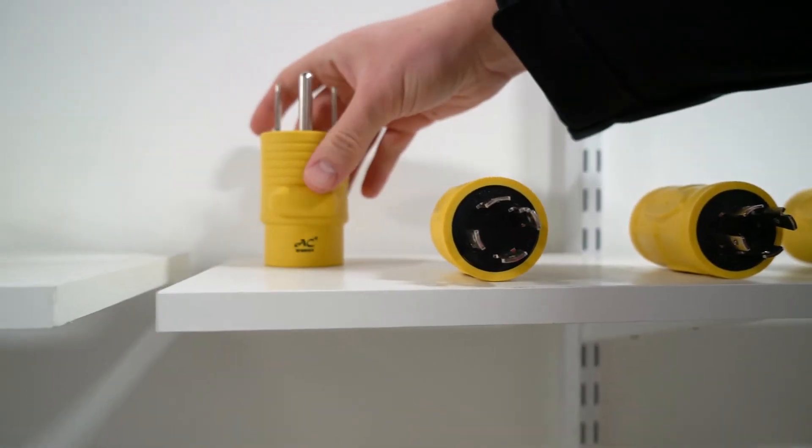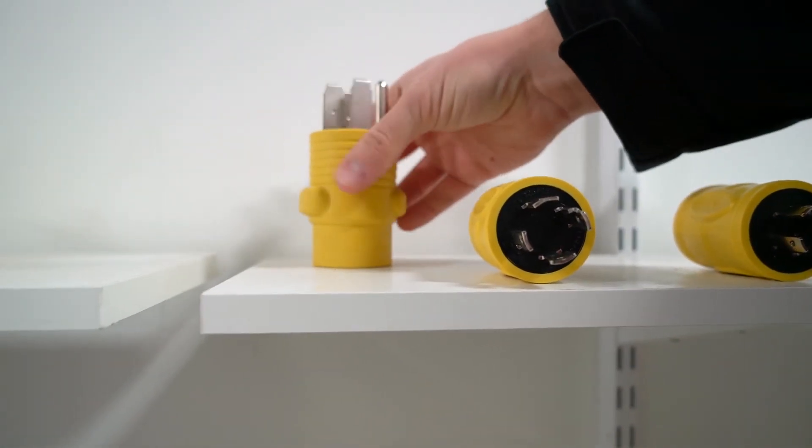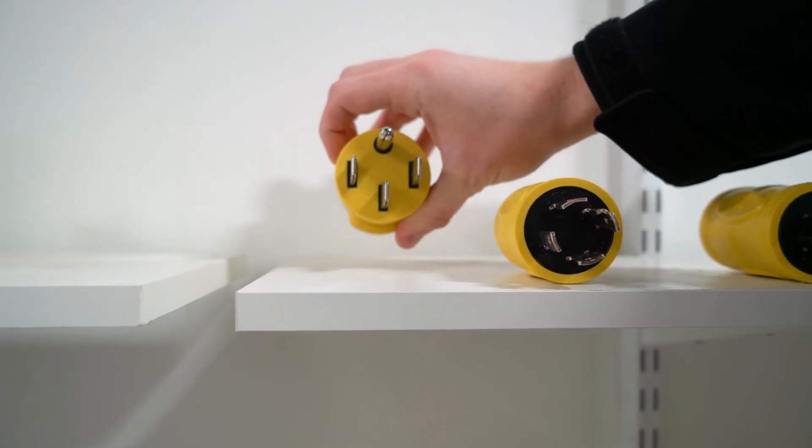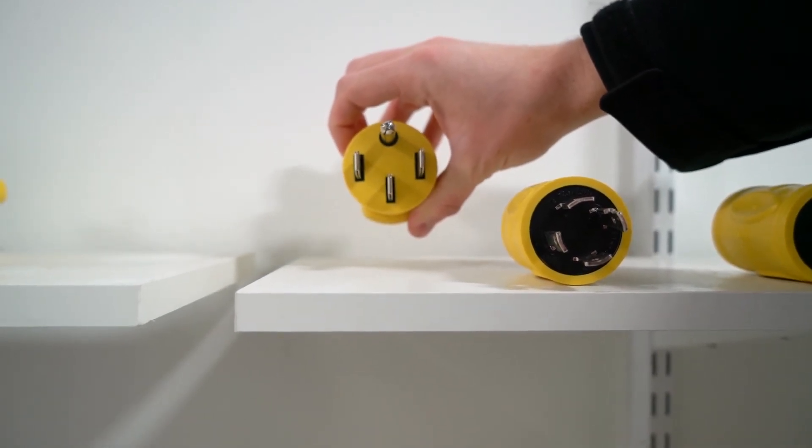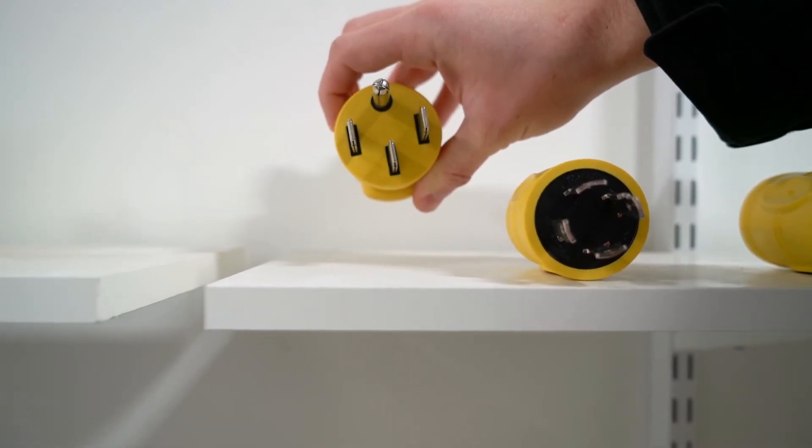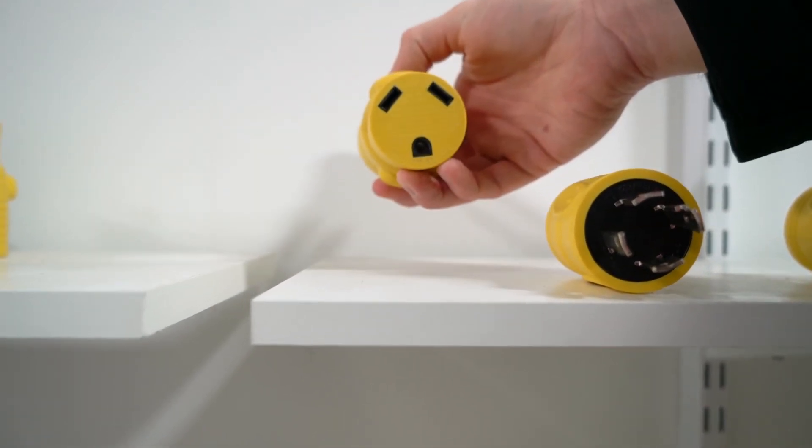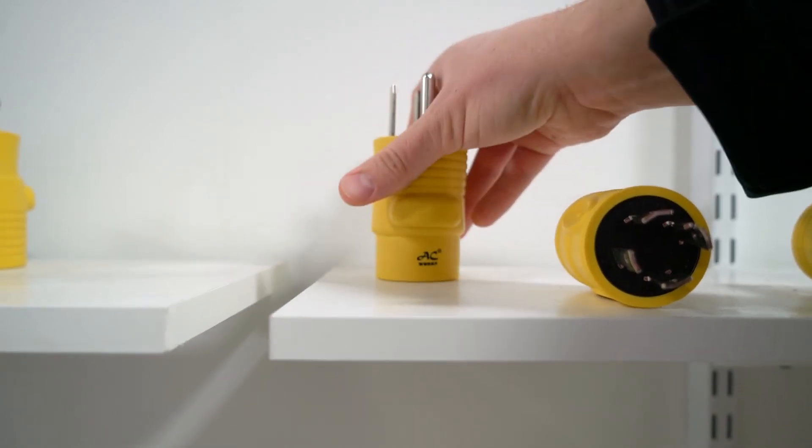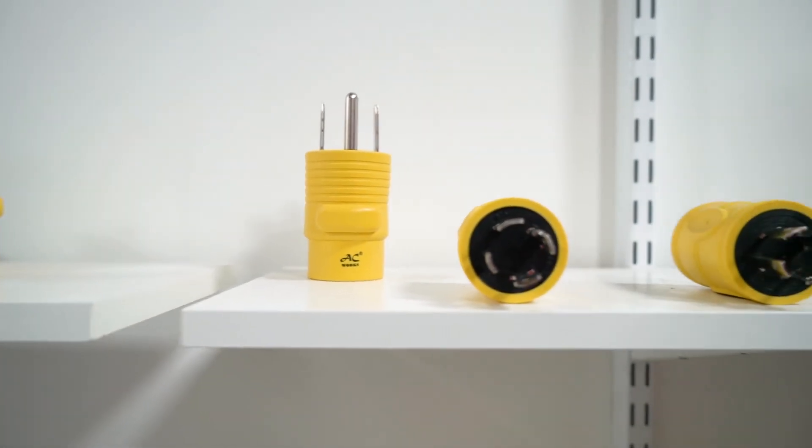Then we have this bigger one up here. This is actually for a 1450 connection. So you'll actually see that on the RV campground power pedestal. It's usually used for 50 amp RVs, but you can still connect your 30 amp RV to it and only use 30 amps. So there won't be any worry of overdrawing.